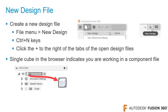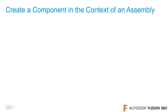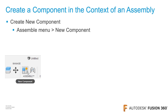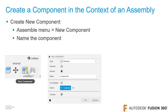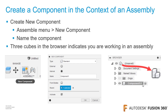When you're working in a component file, at the top of the browser you'll see a single cube. You can also create a component in the context of the assembly. To do so, from the Assemble menu click New Component. In the dialog box you can change the name of the component. At the top of the browser, notice that you now have three cubes, which represent that you are working in an assembly.